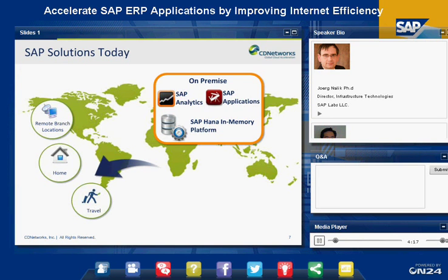Analytics are also used by the customers of our customers — for example, if a company has an online website, their customers may receive proposals about products that are interesting to them, much like iTunes from Apple. The applications are increasingly based on our new SAP HANA in-memory platform.